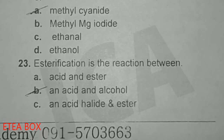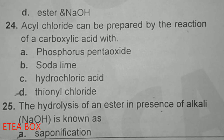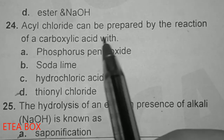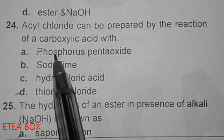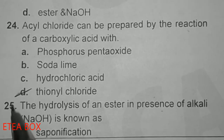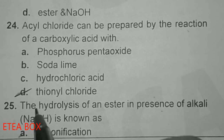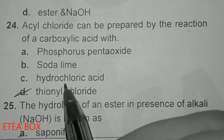Esterification is the reaction between an acid and alcohol — option B is correct. Acetyl chloride can be prepared by the reaction of carboxylic acid with thionyl chloride — option C is correct. These reactions are present in your book.